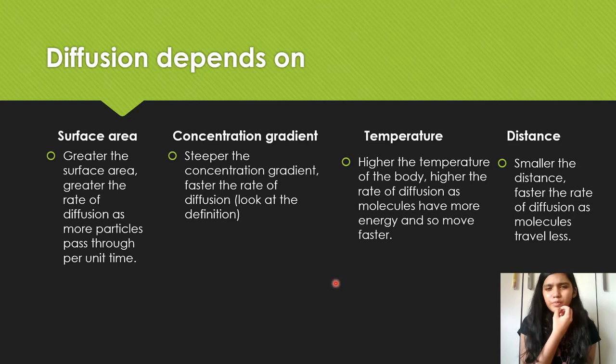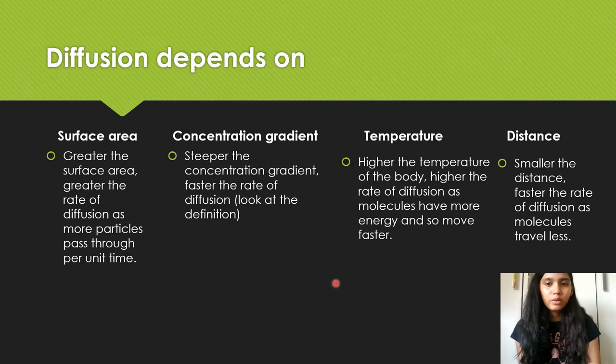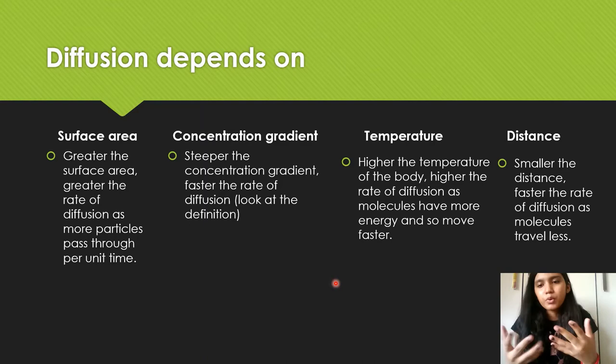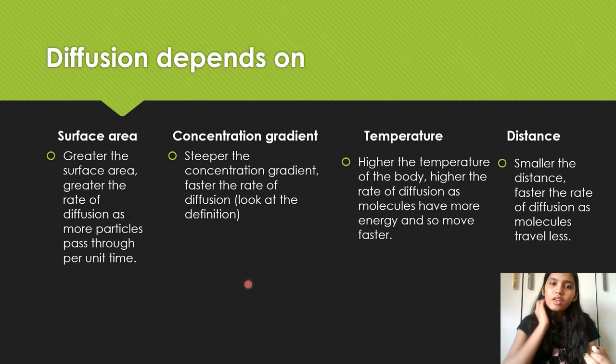Now these are the four main factors that diffusion depends on. First, surface area — the greater the surface area, the faster the diffusion. For example, if you have a small surface area of one centimeter squared versus one of ten centimeters squared, and you pass the same volume of gas through a cell-membrane-like material with pores, diffusion will be faster where the area is greater because more particles can pass through per unit time.